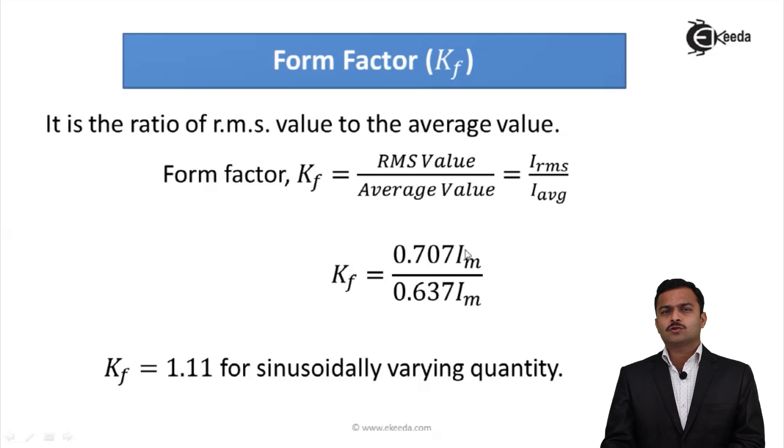If you solve, you will get a constant equal to 1.11. So form factor for AC sinusoidal quantity is 1.11.